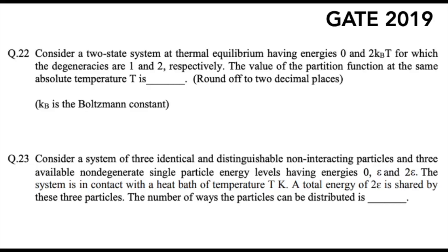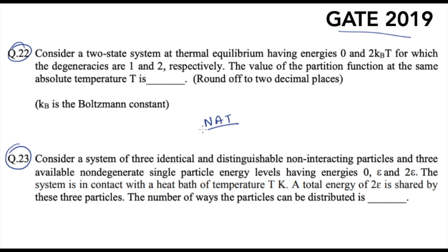Hello everyone and welcome to the channel. In this video I'm going to take two questions from statistical thermodynamics, both of which were asked for one mark each in the GATE 2019 exam. I'll try to explain how you can easily solve these questions. Both of them were numerical answer type questions, so there were no options. They were based upon basic aspects of statistical thermodynamics.